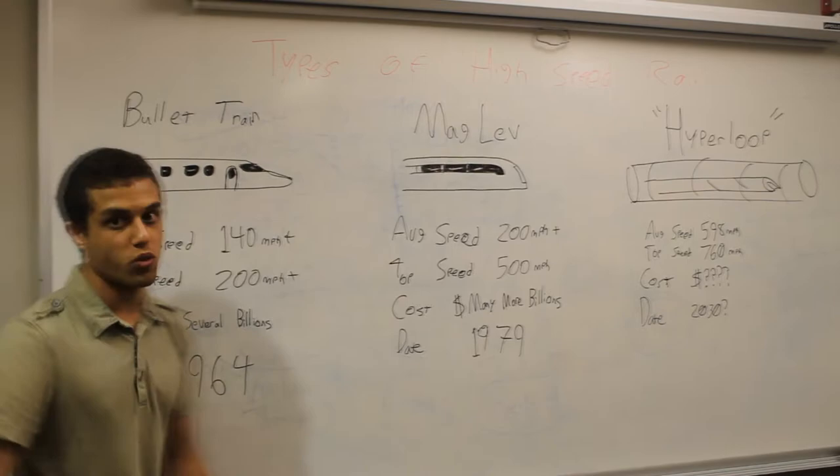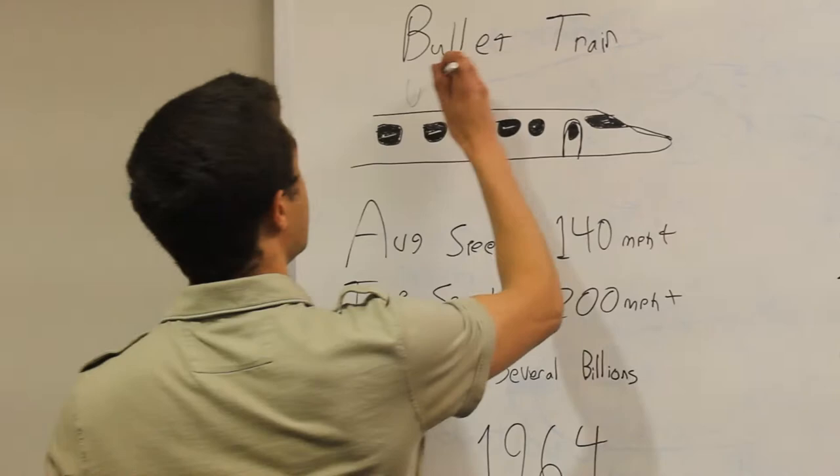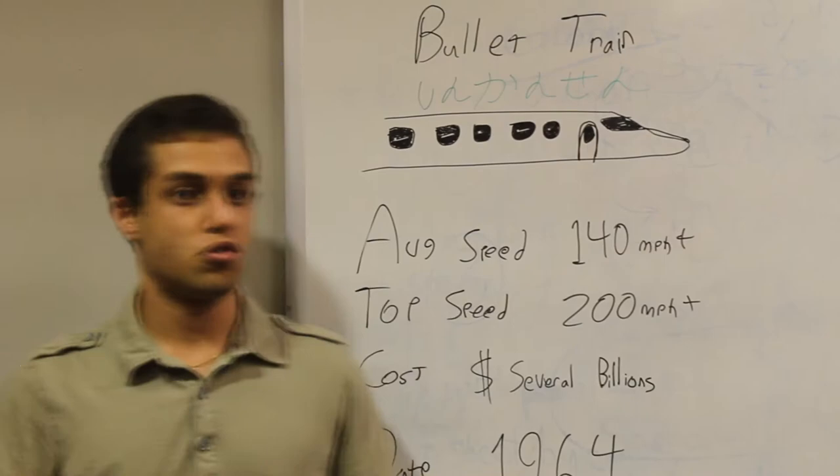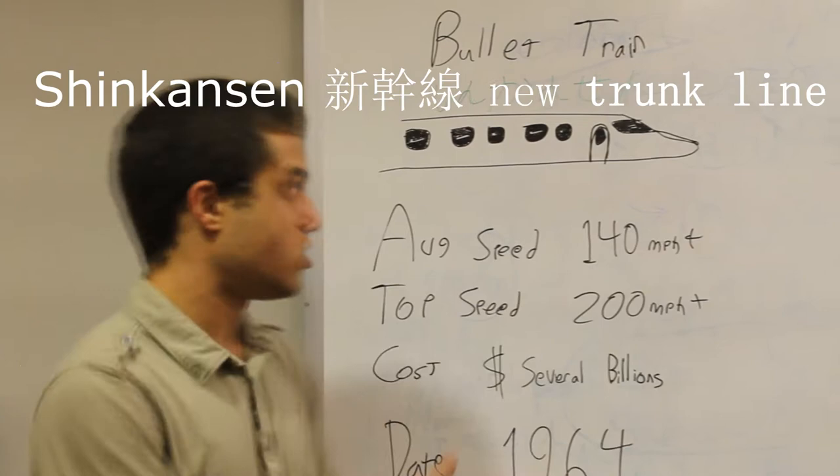Let's go to the first one, which is called the bullet train, or in Japan it will be called the Shinkansen. And I think my Japanese is correct, the Shinkansen, which pretty much means New Route Trail or something. I'll probably say it in the video exactly what it means in kanji or in Japanese.